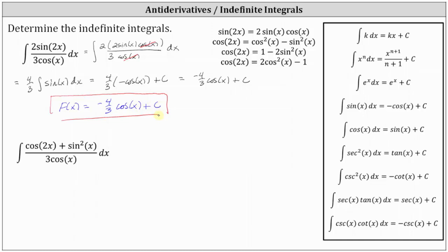For the second example, we have the integral of cosine two x plus sine squared x, all divided by three cosine x dx. Once again, there's no obvious integration formula to use, and therefore we try to simplify the integrand function. Notice in this example we have the cosine of two x in the numerator, which we can perform a substitution for. However, for cosine two x there are three possible substitutions.